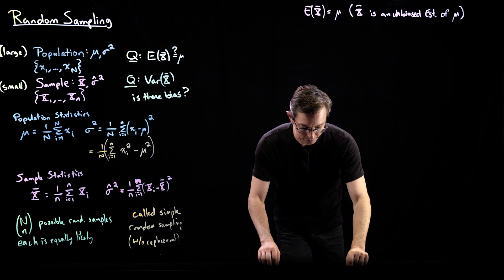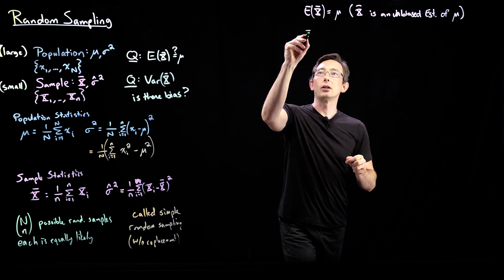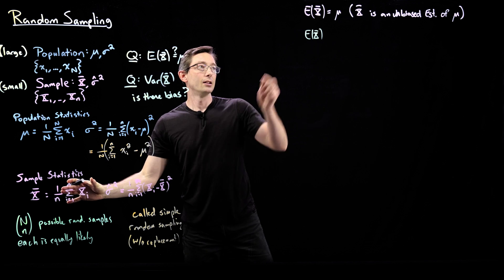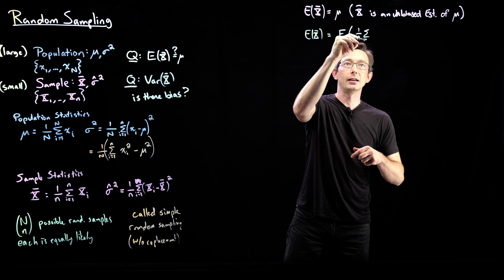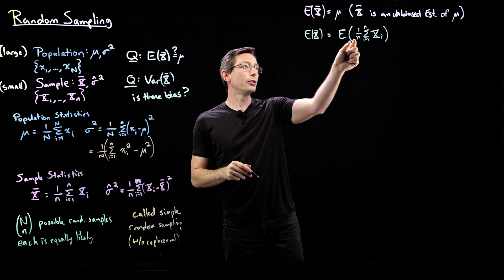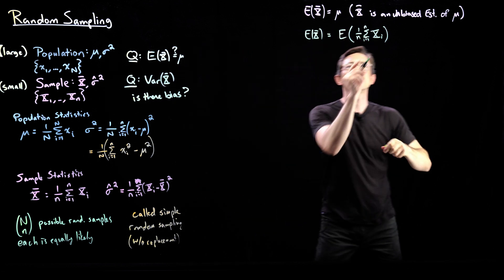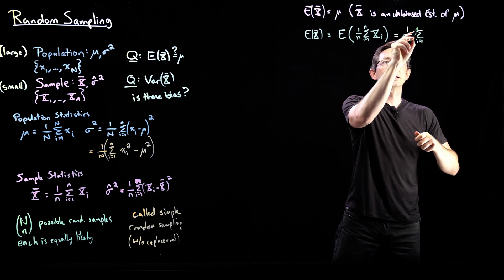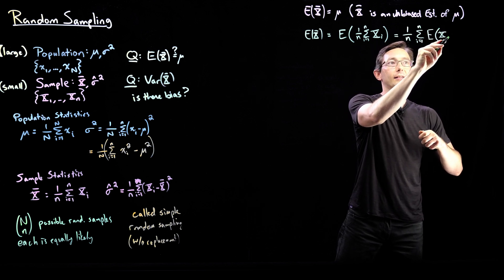We're going to prove this now — it's pretty easy to prove. The expectation of X-bar is literally plugging into the expectation: it equals the expectation of (1/n) times the sum from i equals 1 to n of each random variable X_i. We can pop the constant out, and the expectation of a sum is the sum of expectations. So this equals (1/n) times the sum from i equals 1 to n of the expectation of each X_i.